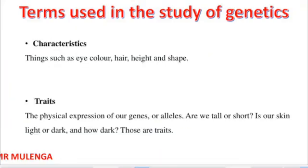Characteristics are things such as eye color, hair, height and shape. Traits are the physical expressions of our genes or alleles. For example, if we are asked whether we are tall or short, or whether our skin is light or dark — these are what we call traits.